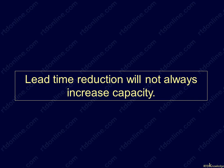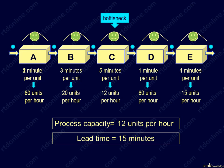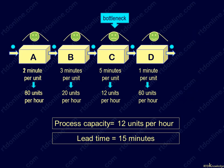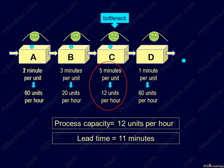Suppose through re-engineering, we realize that station E is unnecessary and we can completely take it out of the process. Lead time is cut to 11 minutes. But note that the bottleneck is still station C, which means that our process capacity stays at 12 units per hour. The principle is that if lead time is reduced by cutting or eliminating non-bottleneck operations, process capacity will not increase.